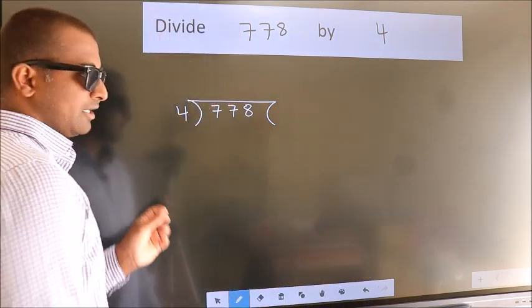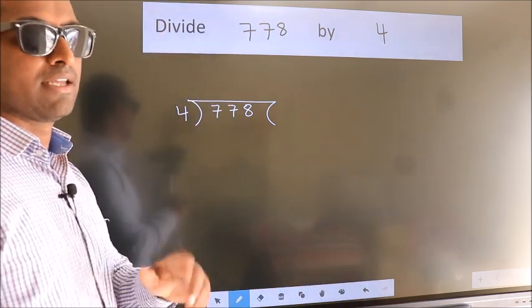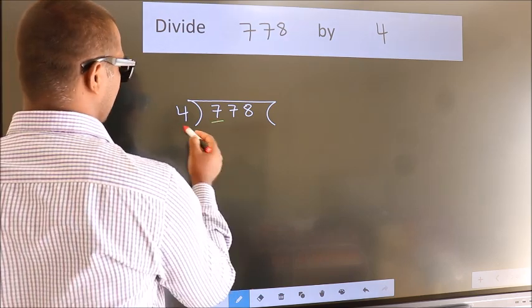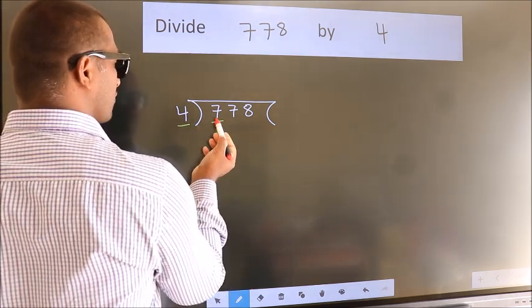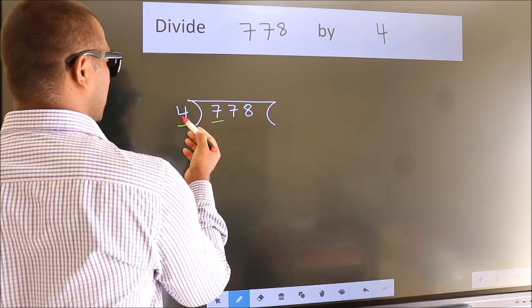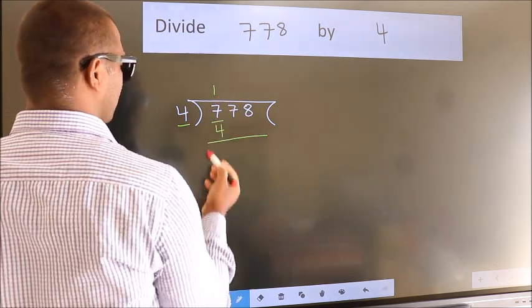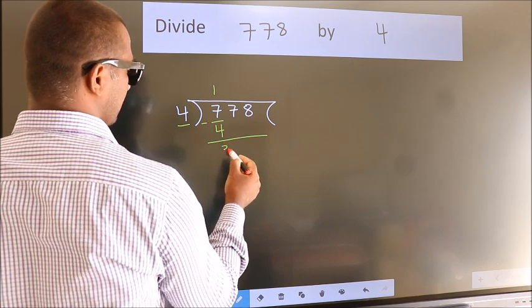This is step 1. Here we have 7, and here 4. A number close to 7 in the 4 times table is 4 once, which is 4. Now we subtract and get 3.